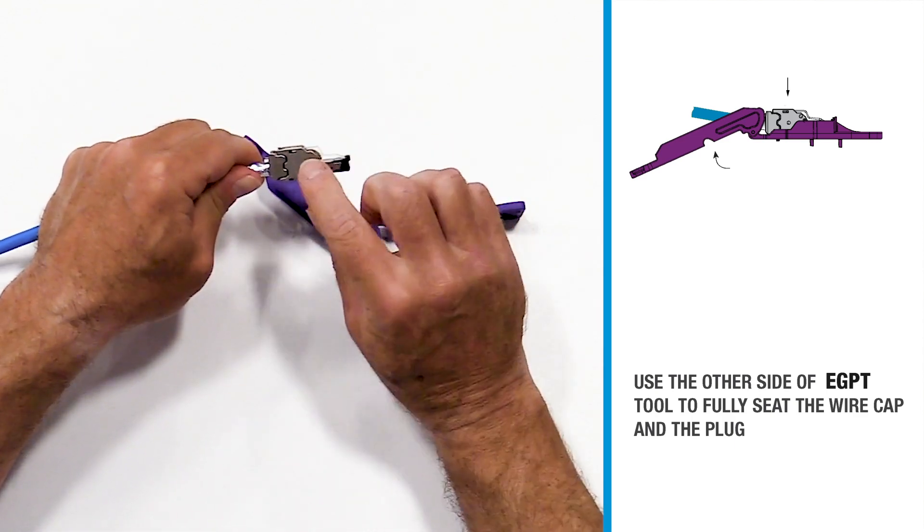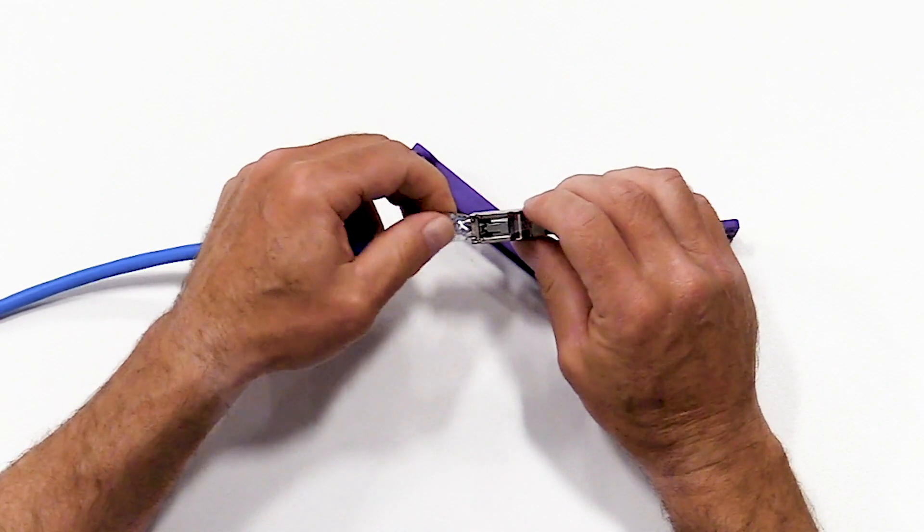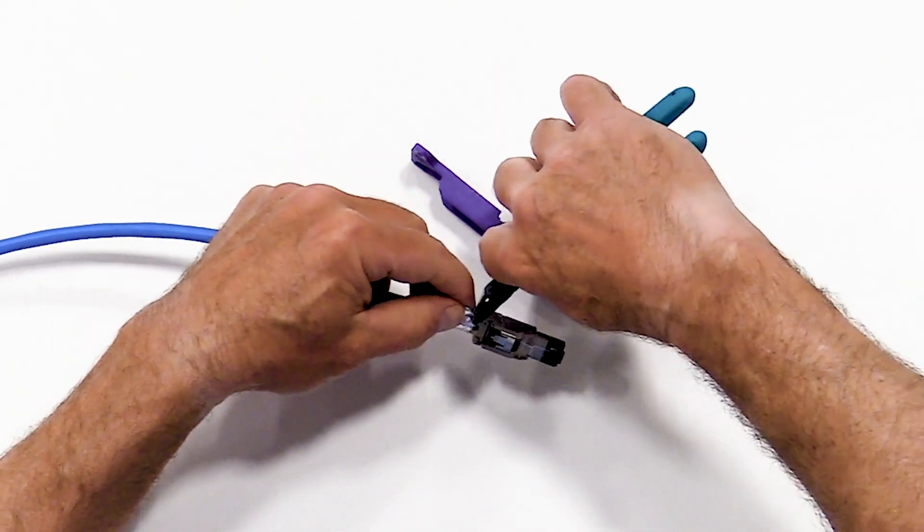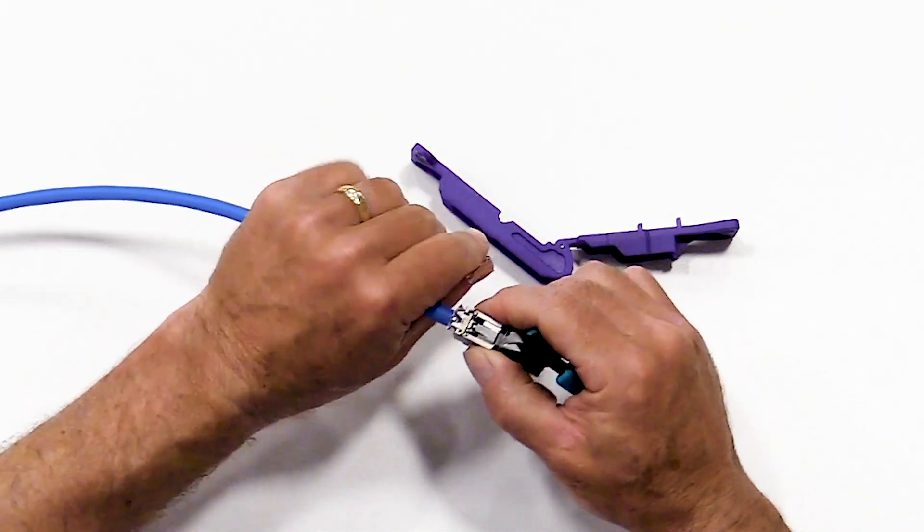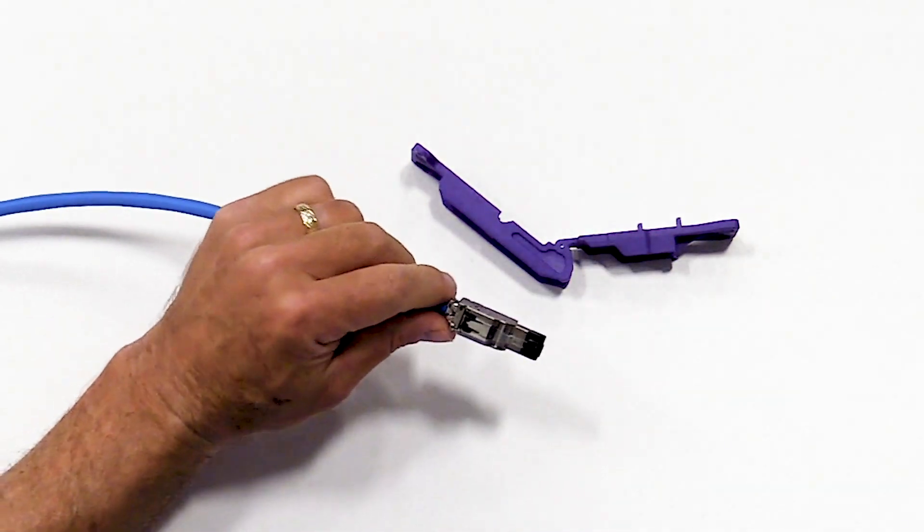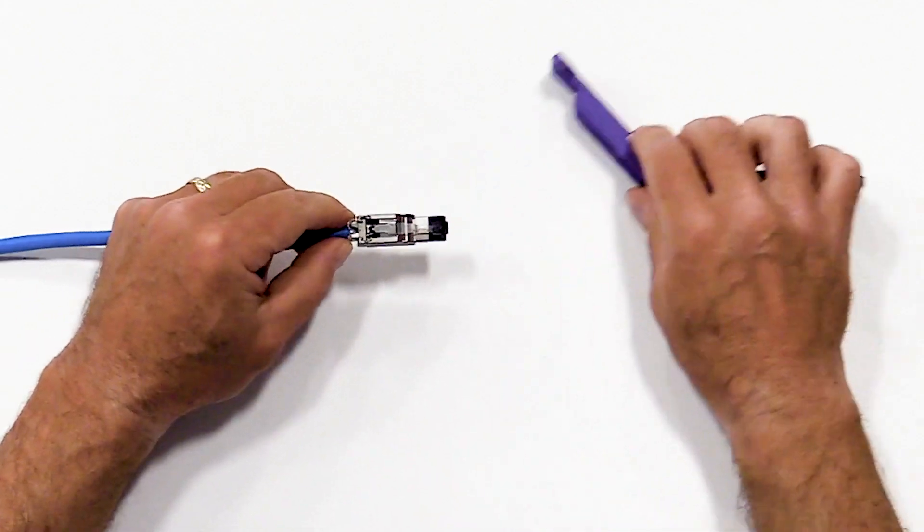At this point, we can cut off any excess foil and we have a properly terminated field terminable plug.